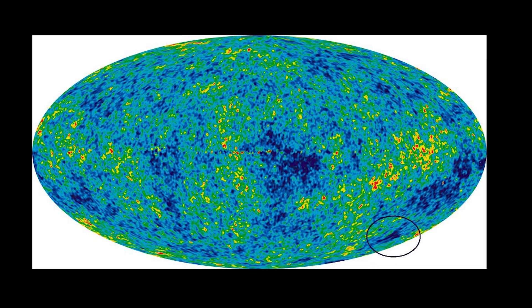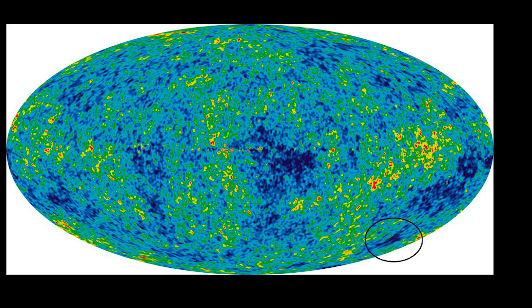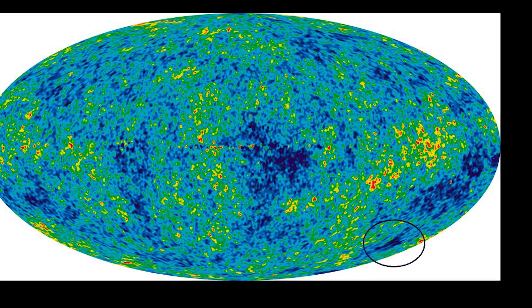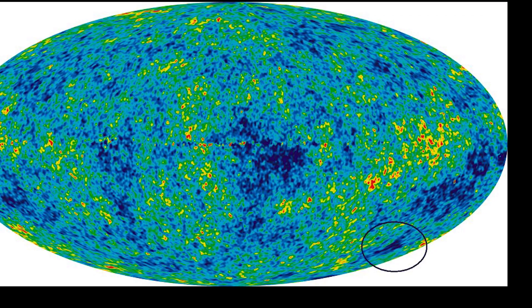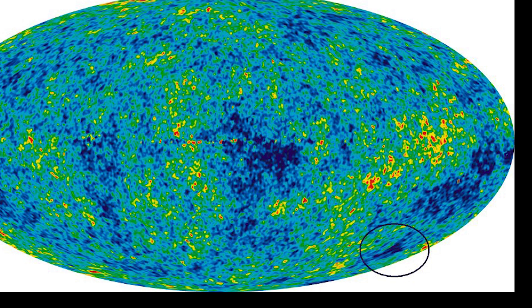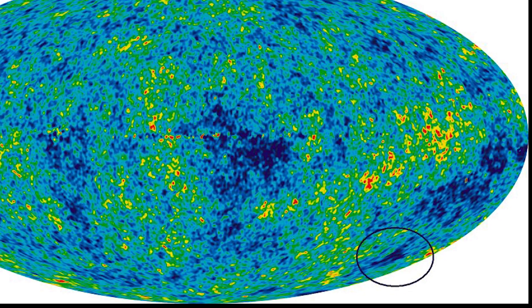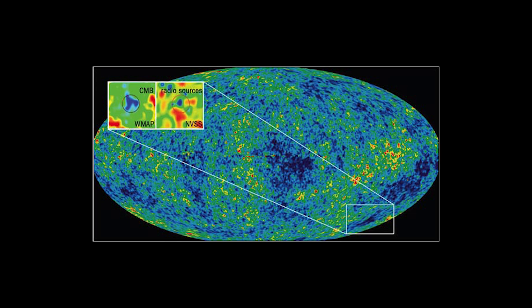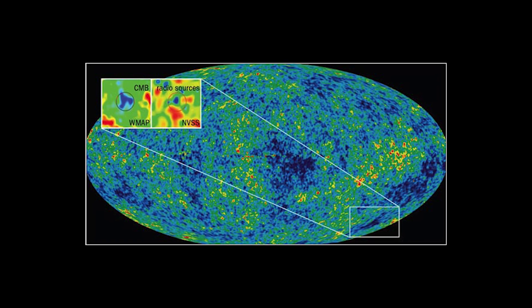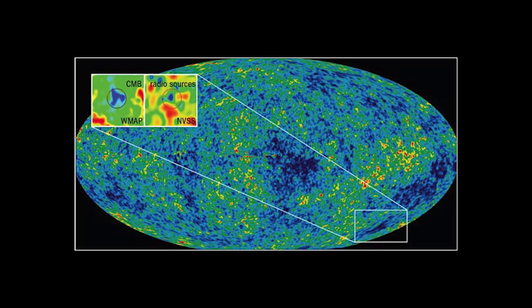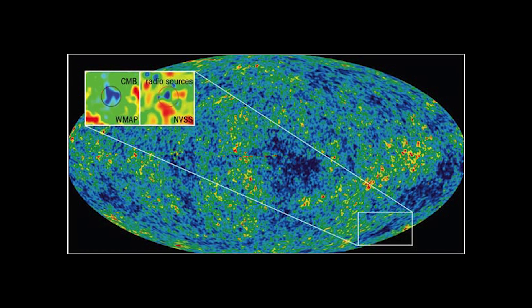Cold spots and cosmic scars. Let's zoom out in one particular mystery. The CMB cold spot, a large, unusually empty region in the cosmic microwave background. It's colder than it should be and eerily quiet. Some scientists believe this might be the result of a supervoid, a vast region of space with fewer galaxies.